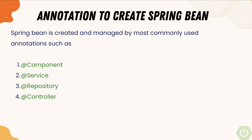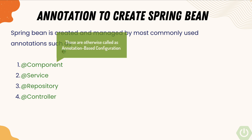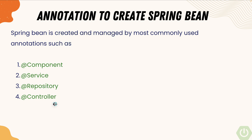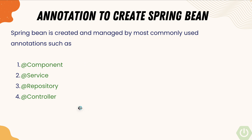The Spring Bean is created and managed using the most commonly used annotations such as @Component, @Service, @Repository, and @Controller. These four types of annotations are used to create a Spring Bean, and they are going to be very helpful while we create automation test code as well. When you annotate a class using these annotations, it does quite a lot of different things.